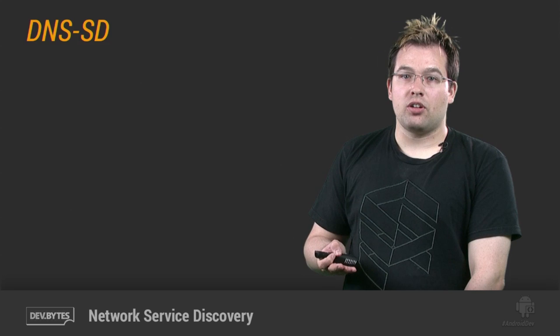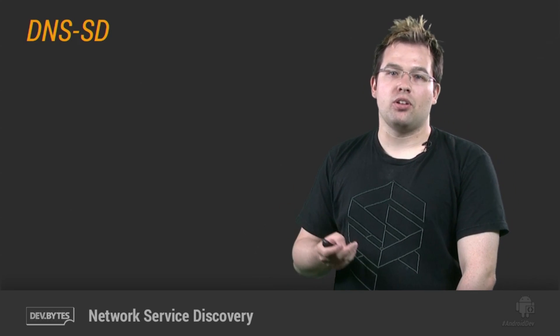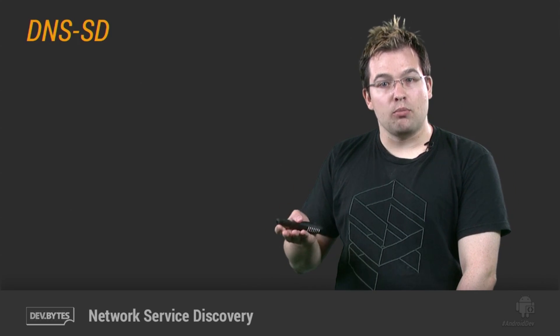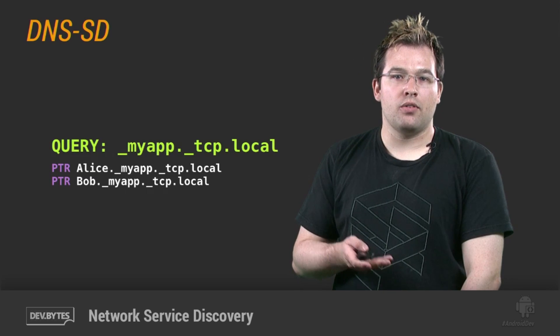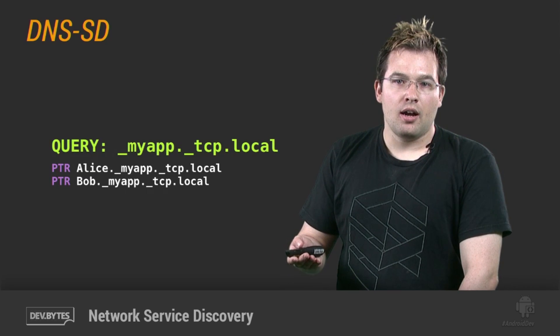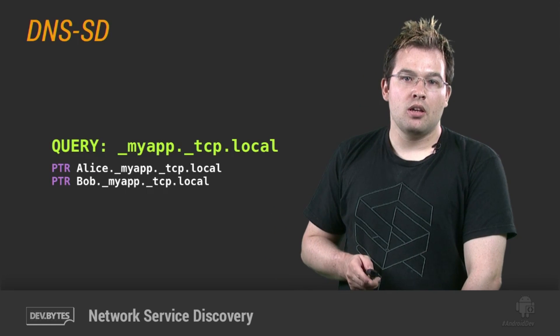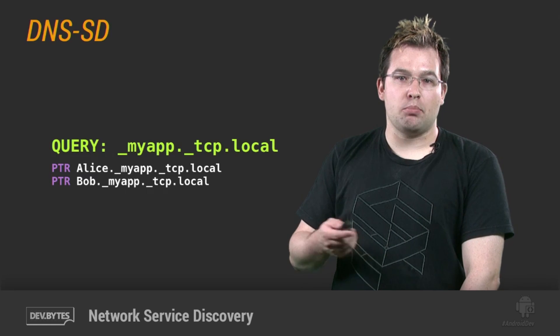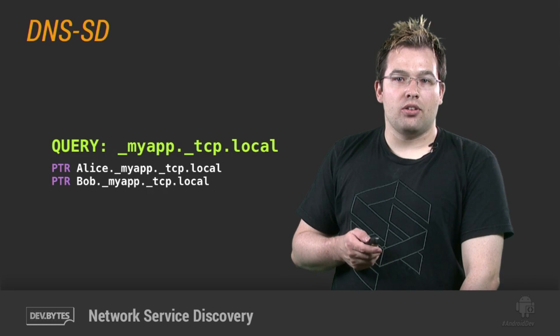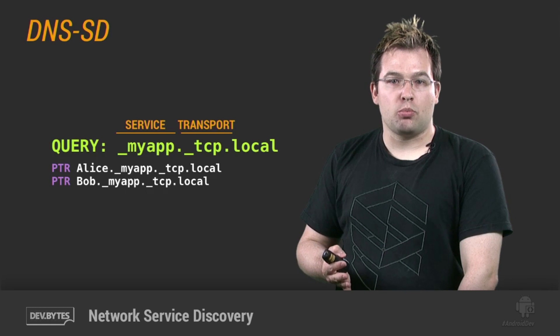DNSSD extends multicast DNS to provide service discovery, listing what hosts implement specific protocols. Many people think of DNS exclusively in the context of mapping host names to IP addresses, but DNS is actually a general, if somewhat limited, hierarchical database — it can store almost any kind of data for almost any purpose. Service names take the form of service.transport.local. So in this case, we're using _myapp._tcp. Myapp is the service name and TCP is the network transport being used.